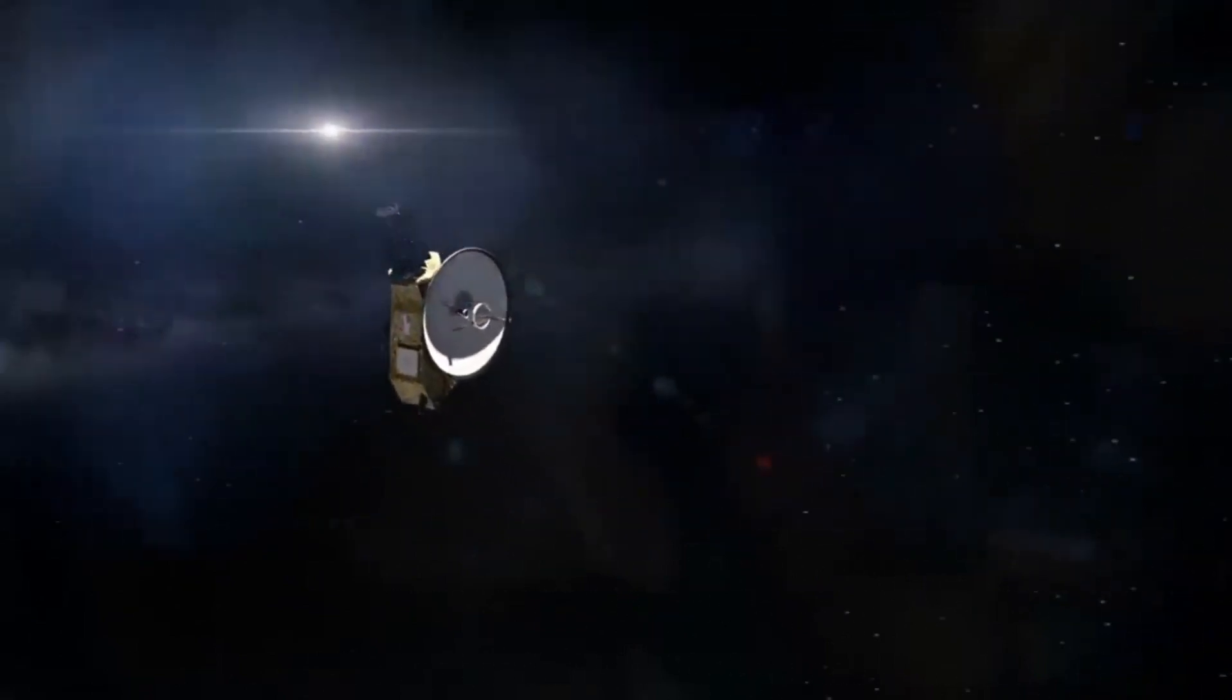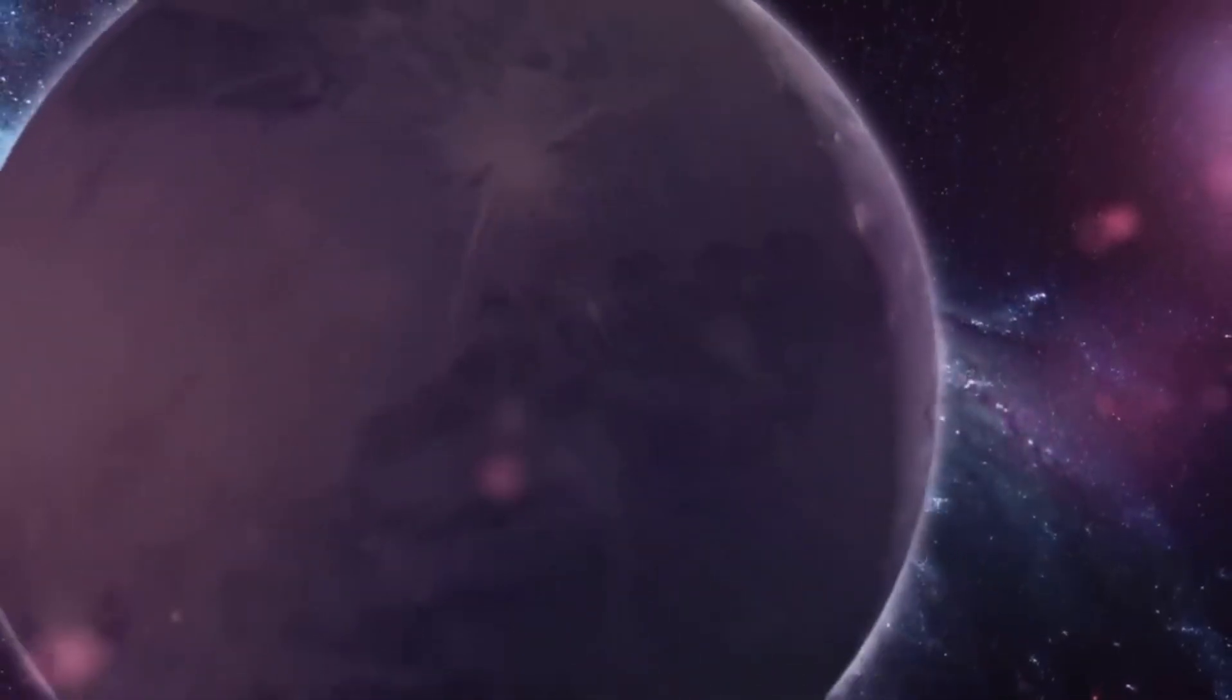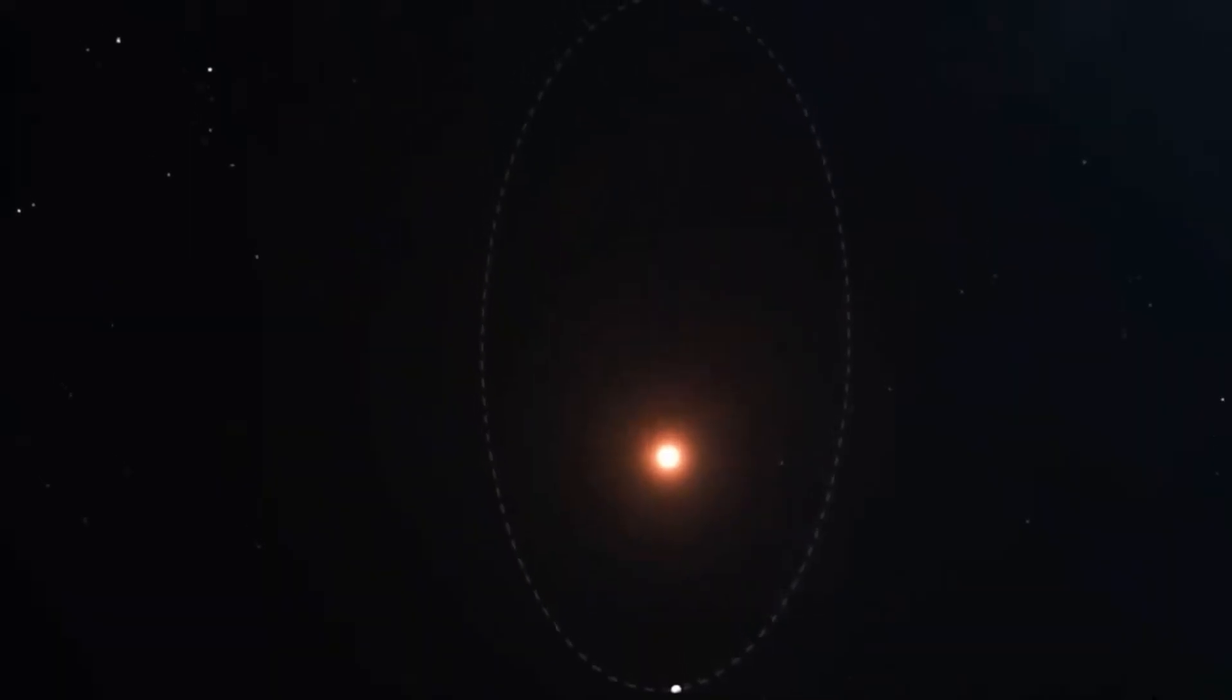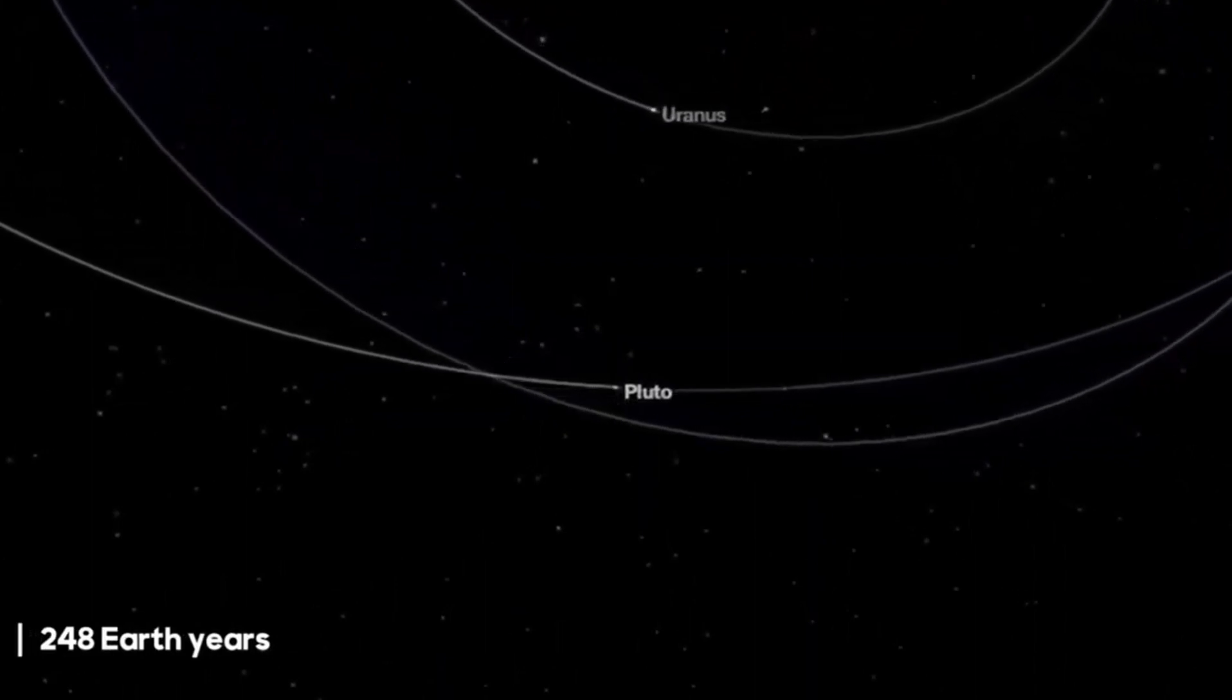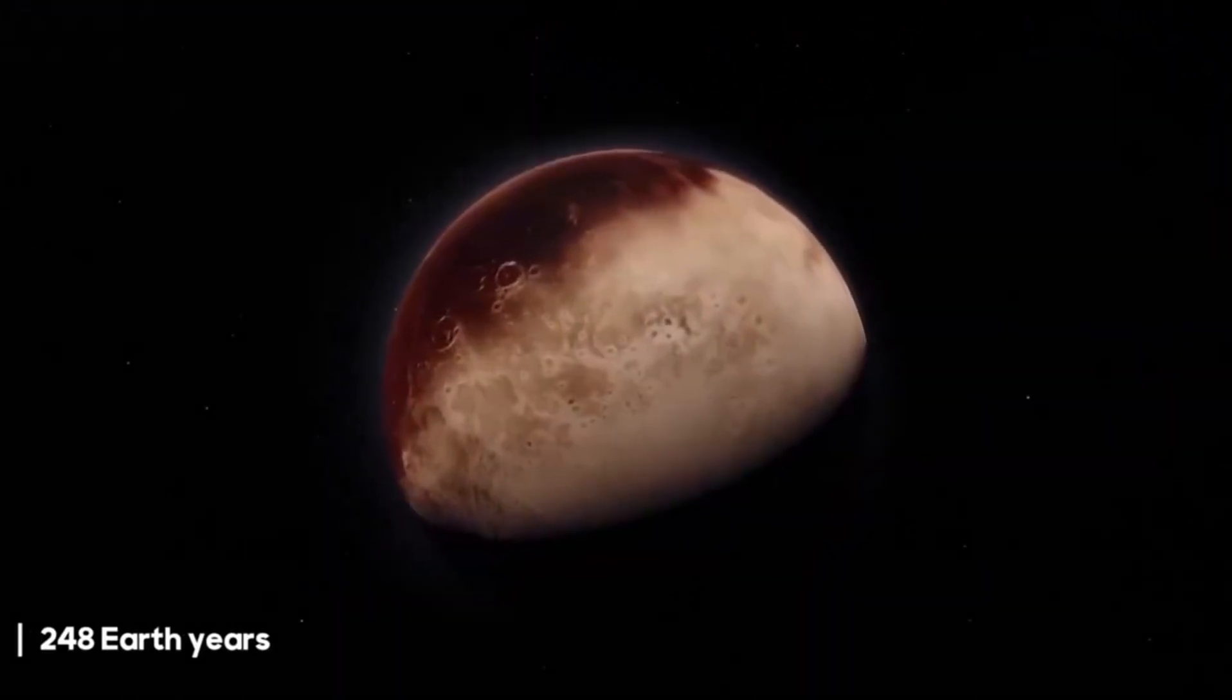Cassini was an orbiter whose mission is to study the orbit of the planet. Huygens, on the other hand, was designed to land on Titan and study the satellite on its surface. After almost seven years, the probes entered the orbit of the gas giant.